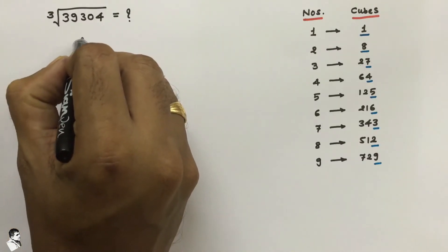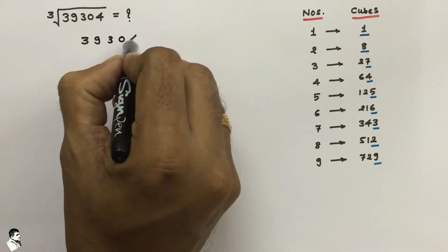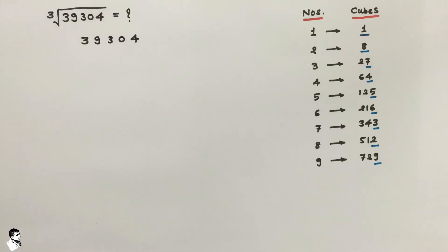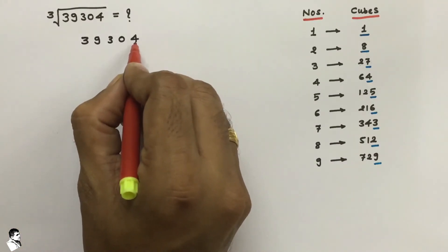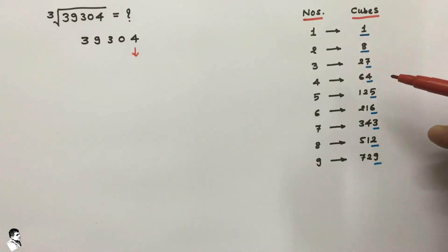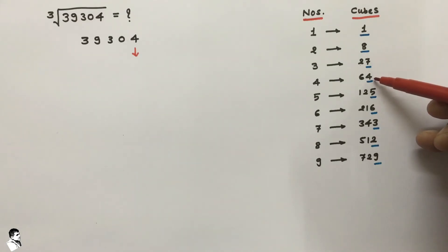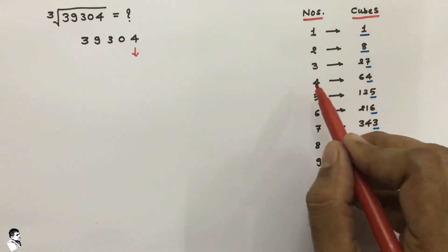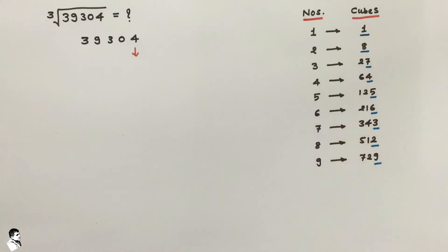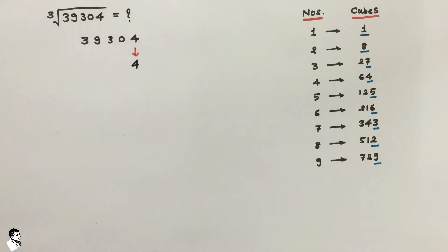So first of all we write down the number again, that is 39304. If you look at the last digit of that number, that is 4. Now we go to this table and find out which cube ends in 4. We found that the value is 64, which is the cube of 4. So 4 is our last digit of the answer.